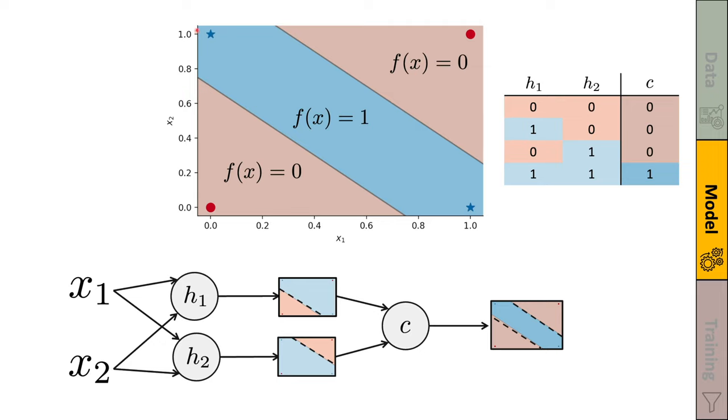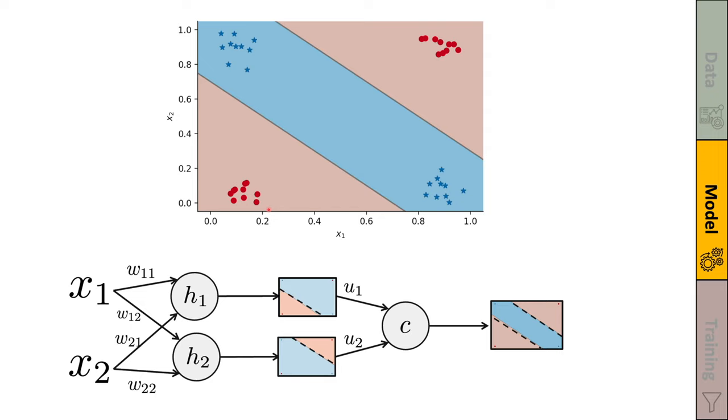And therefore, only this diagonal band will also give us class 1. The upper corner and the lower corner will give us prediction of 0. And that's exactly what we need. So this will give us the correct classification for all the points that we have here. This is nice. Now we can also classify the clusters of these points correctly.